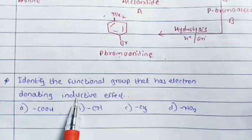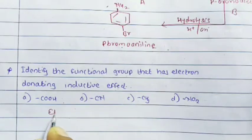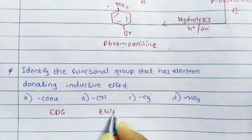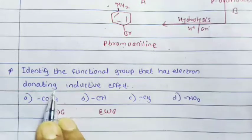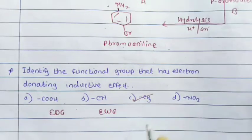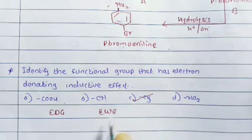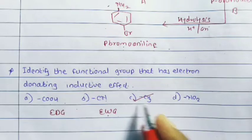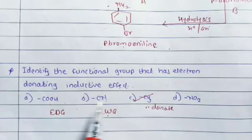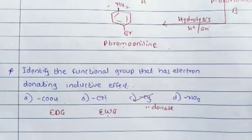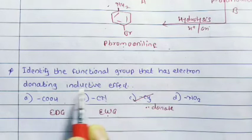Next question: identify the functional group that has an electron donating inductive effect. This effect is of two types — electron donating and electron withdrawing. CH3 has an electron donating inductive effect, while COOH, CN, and NO2 are electron withdrawing groups. CH3 donates electrons to another atom, whereas COOH, CN, and NO2 withdraw electrons. Therefore, CH3 has the electron donating inductive effect.